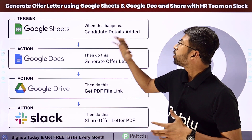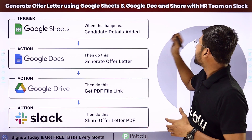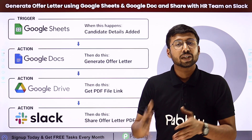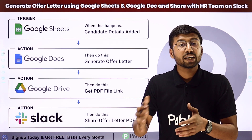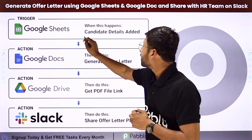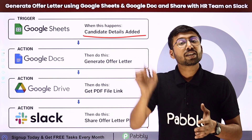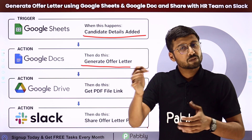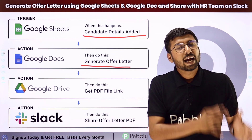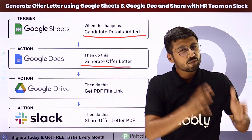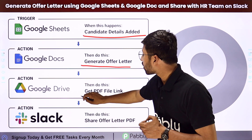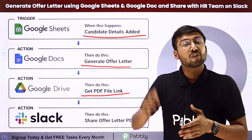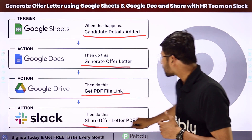In this video, we are going to learn how to generate an offer letter using Google Sheets and Google Docs, and share it with the HR team on Slack. We are going to set up an automation so that whenever the HR team shortlists a candidate and enters their details in Google Spreadsheet, we automatically generate the offer letter using a template in Google Docs.